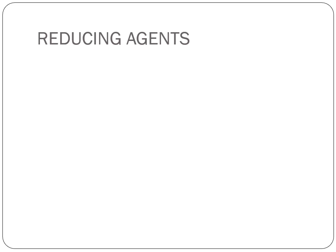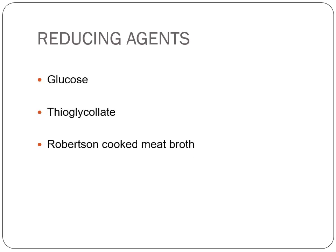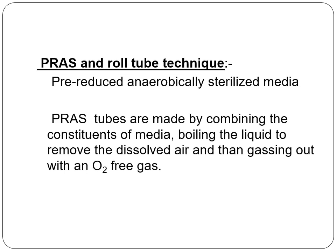Reducing agents such as glucose thioglycolate and Robertson Cooked Meat (RCM) broth can also be used. RCM broth is the most preferred for use as both a transport medium and for culturing anaerobic samples. Meat particles in RCM contain unsaturated fatty acids that utilize oxygen, and glutathione and cysteine present in the meat also consume oxygen. Finally, PRAS — pre-reduced anaerobic sterilized — media are prepared in an oxygen-free gas environment and are used for processing anaerobic samples.